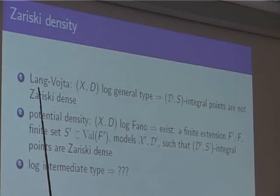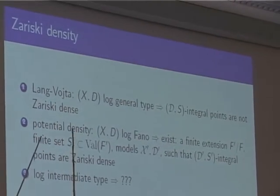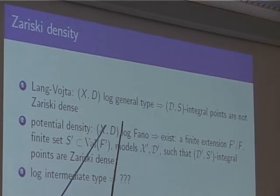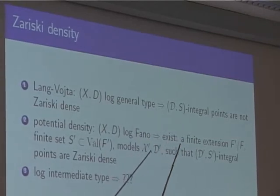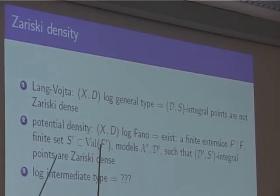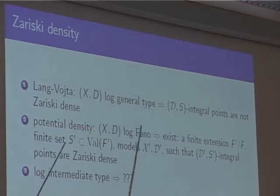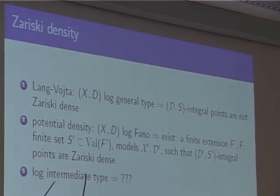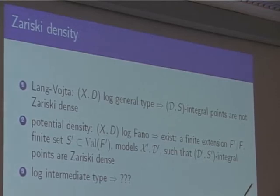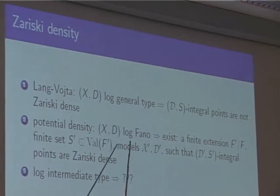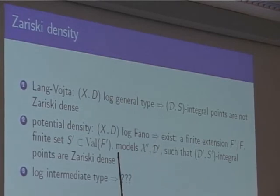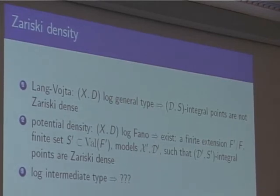Now the conjectures about the correspondence between geometry and arithmetic. The Lang-Vojta conjecture says that if you have a variety of log general type, then D-S-integral points are not Zariski dense, for any finite set S and any choice of models. What happens in the opposite situation? In complete parallel to what we discussed for rational points, if (X, D) is log Fano, then one wants some version of potential density.